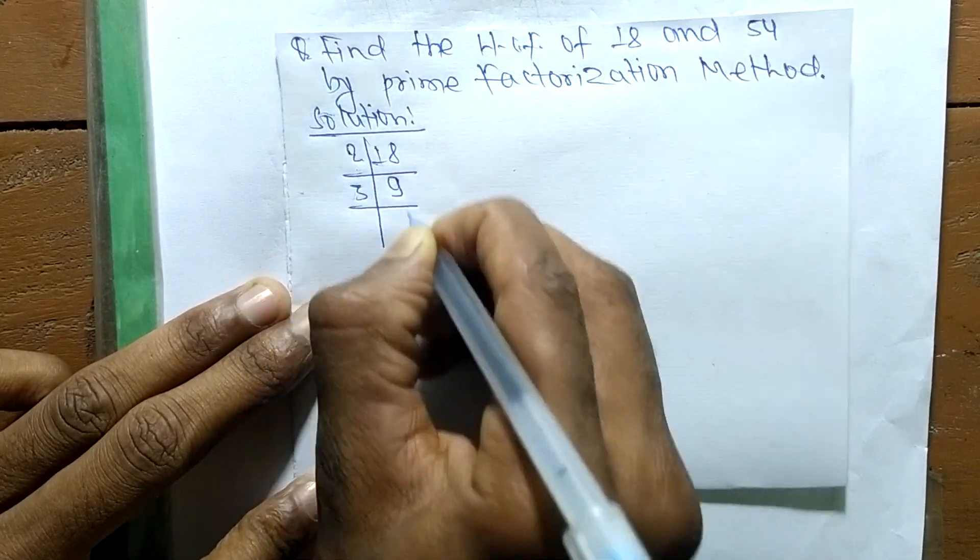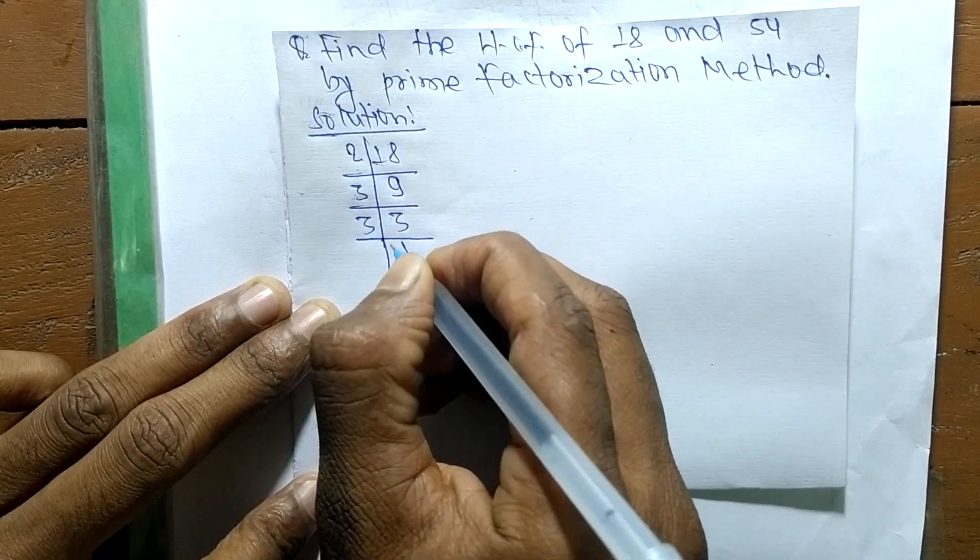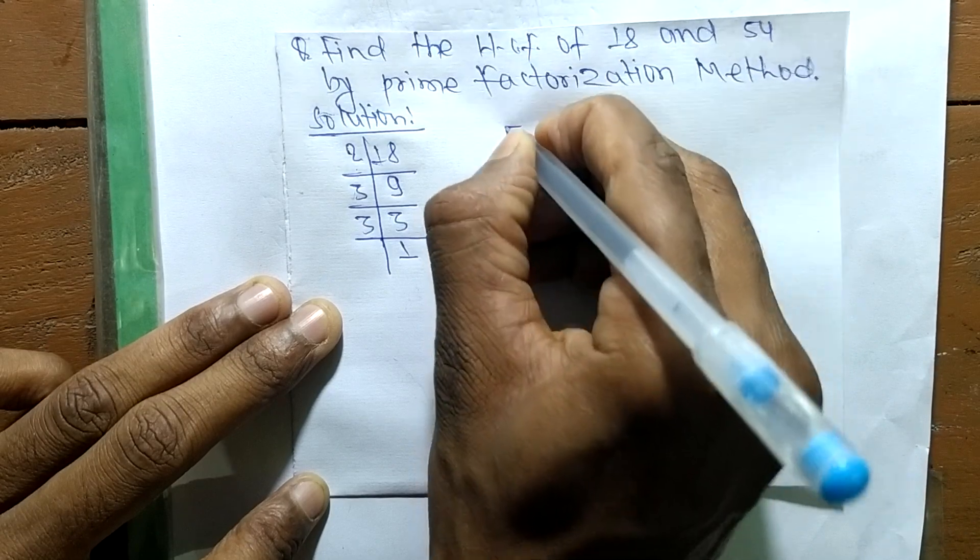2 times 9 means 18, 3 times 3 means 9, and 3 times 1 means 3. In the same way, the prime factors